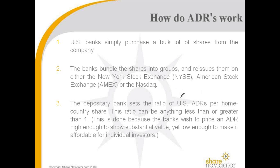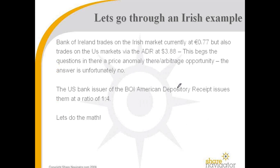The depository bank sets the ratio of US ADRs per home country share. This ratio can be anything less than or greater than one. This is done because the banks wish to price them high enough to show that they're valuable, and yet low enough that they're accessible for investors. So let's go through the example with Bank of Ireland.